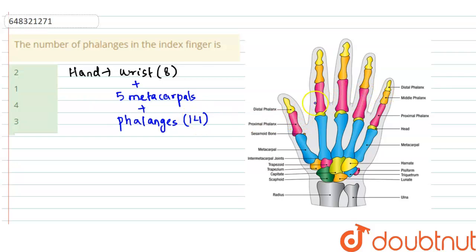Here is the thumb and here is the index finger. So if we see about the phalanges, these are a group of bones. They are nothing but a group of bones.